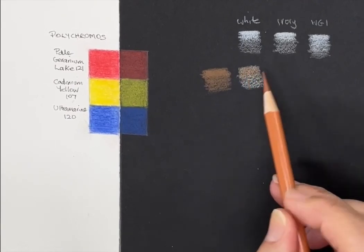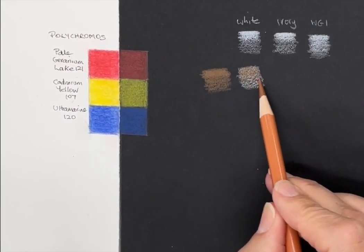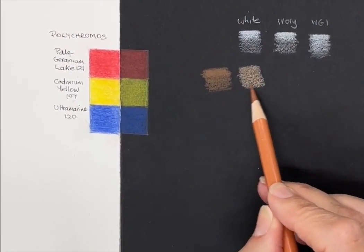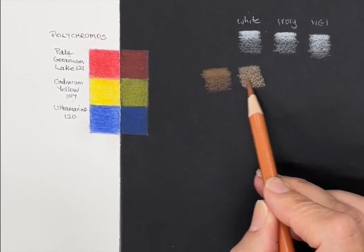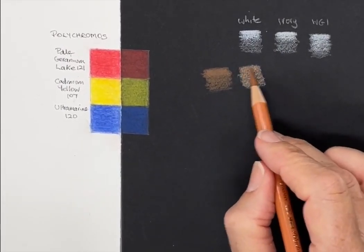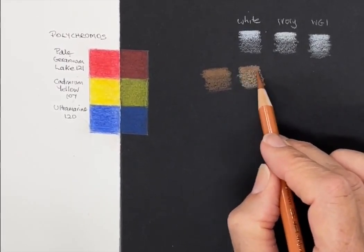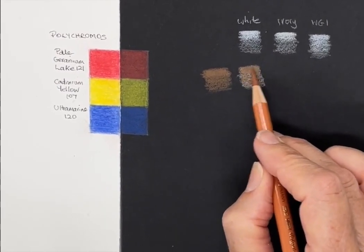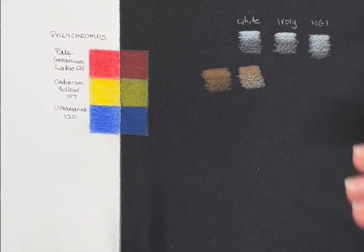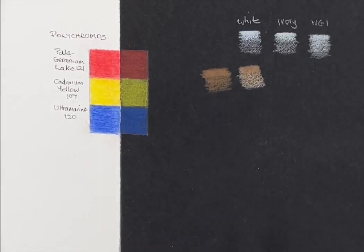But it is lighter as well. What the light color underneath does, even though it's going to make it brighter, it also cools it down and definitely lightens the value. So I'll just go a bit darker there. It is a matter of always trialing your colors before you use them, as always, to see what's going to work.